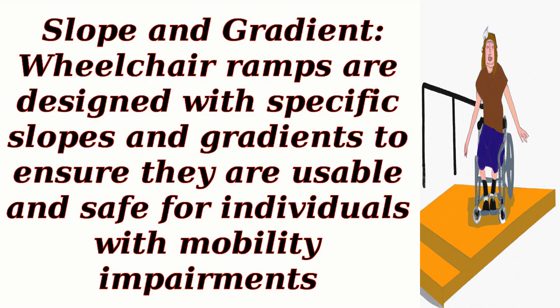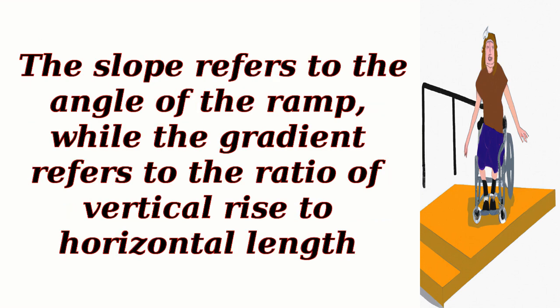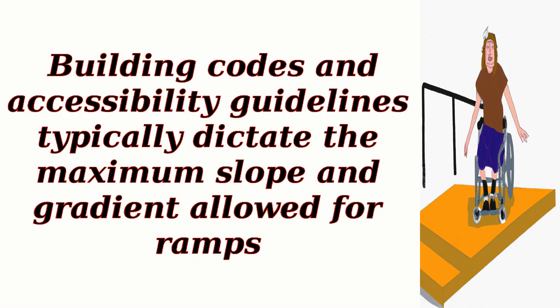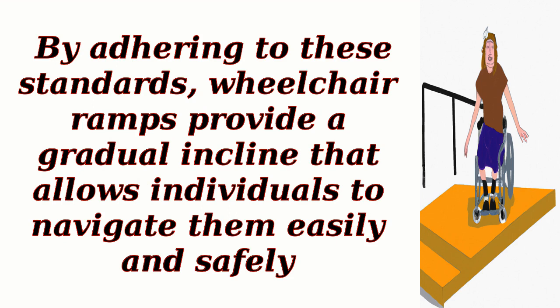Slope and Gradient: Wheelchair ramps are designed with specific slopes and gradients to ensure they are usable and safe for individuals with mobility impairments. The slope refers to the angle of the ramp, while the gradient refers to the ratio of vertical rise to horizontal length. Building codes and accessibility guidelines typically dictate the maximum slope and gradient allowed for ramps, providing a gradual incline that allows individuals to navigate them easily and safely.